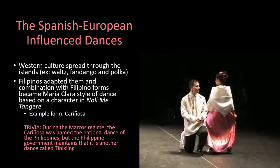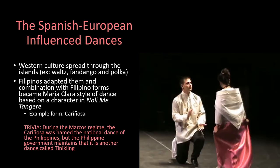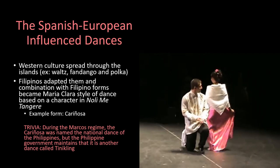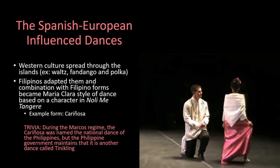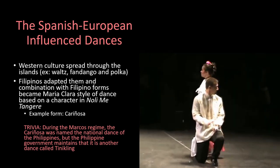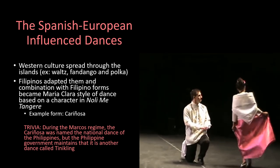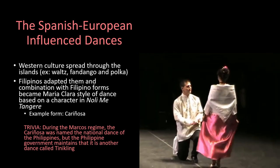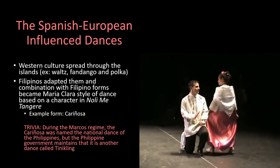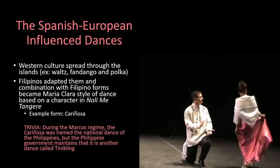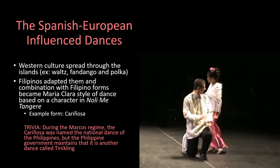During the Spanish occupation, Western culture spread through the islands, including such Western dances as the waltz, fandango, and polka. With a little Filipino flair, they quickly became part of the culture. This new style of dance was named Maria Clara after the tragic character in Jose Rizal's novel Noli Me Tangere. An example of the Maria Clara form is the Carinosa — a much-loved folk dance in the Philippines. During the Marcos regime, the Carinosa was named the National Dance of the Philippines, and to this day school textbooks still claim this. However, the Philippine government maintains it is another dance called the Tinikling, which is the national dance of our country. Today, the Carinosa is performed at social gatherings and festivities.